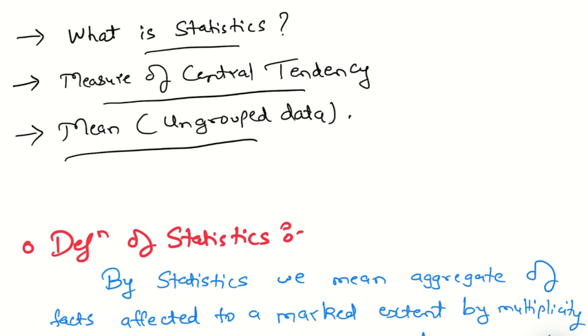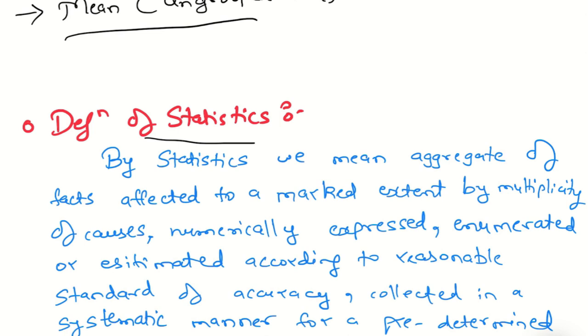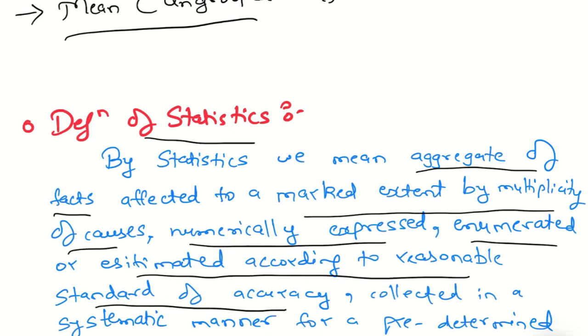What is statistics? What is the definition of statistics? By statistics, we mean aggregate of facts affected to a marked extent by multisibility of causes, numerically expressed, enumerated or estimated according to reasonable standards of accuracy, collected in a systematic manner for predetermined purpose and placed in relation to each other.